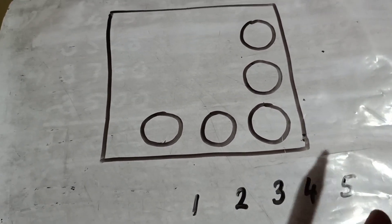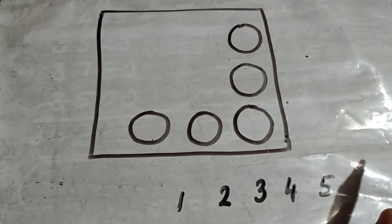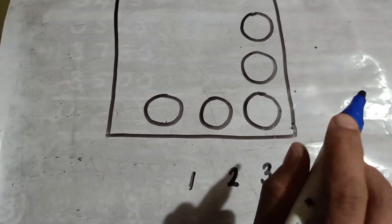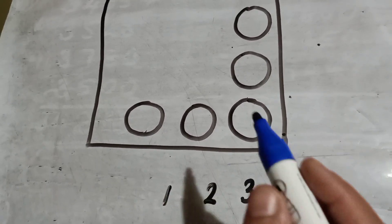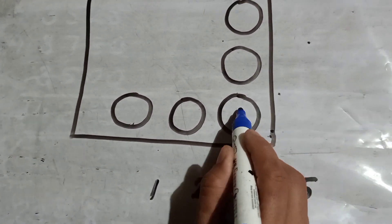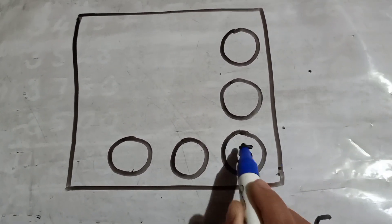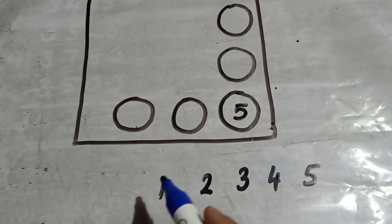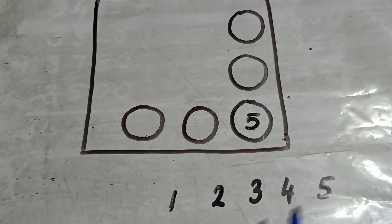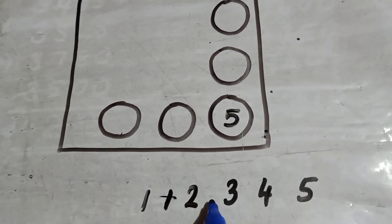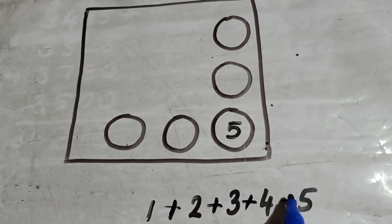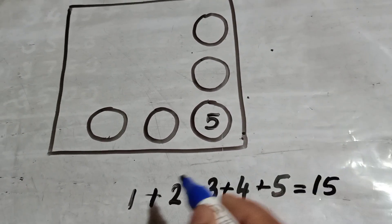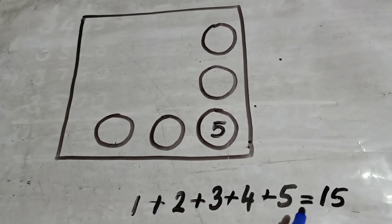If you are participating in any competition, surely you will get a clue. Same way, I am also giving a clue to you. You can write the corner circle as 5. In this case, the first thing we have to do is write down 1 to 5 and add them together. 1 plus 2 plus 3 plus 4 plus 5 is equal to 15.